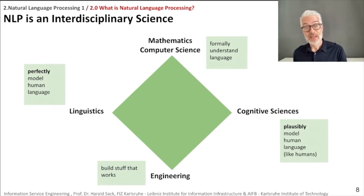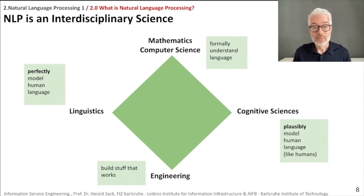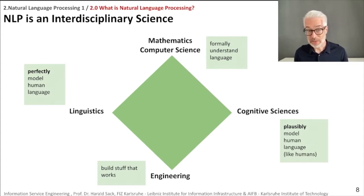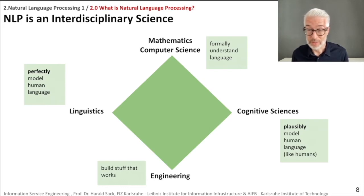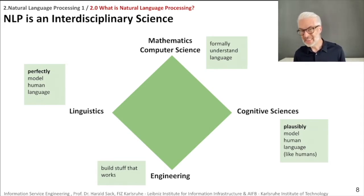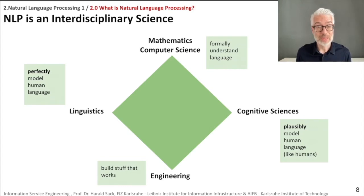The cognitive sciences are also part of NLP, where we try to create a plausible model of human language, which might be based on statistics and statistical evidence, similar to how humans process language. And the engineer in us wants to build stuff that works. We don't necessarily always need the perfect model, since humans themselves don't have perfect models of language understanding. From the engineering point of view, we want to build something that really works most of the time.